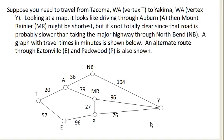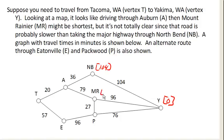We're going to start by looking at our ending vertex and saying, I know that this vertex is 0 miles from the end — because it is the end. Next, we're going to look at all the vertices that lead to Yakima, and for each of these we're going to figure out how far it is from the end. So this one is 104 miles from the end, this one is 96 miles from the end, and this one is 76 miles from the end. That's our first step.